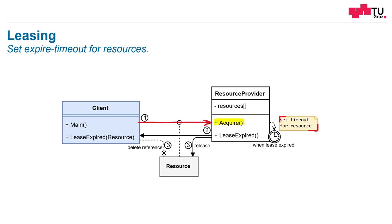After the client acquired the resource, he can use it. But as soon as the lease expires, the resource provider informs us first, so that we know the resource will be invalid soon. Afterwards, the resource provider will release the resource, and we should delete our reference. There are some mechanisms to extend the lease time, or we could reacquire the resource as soon as we get informed that the lease expires.